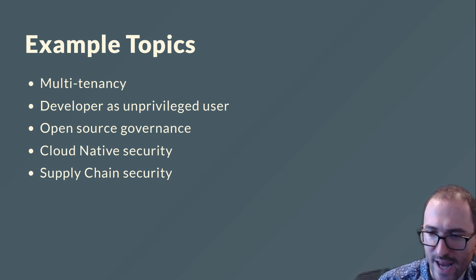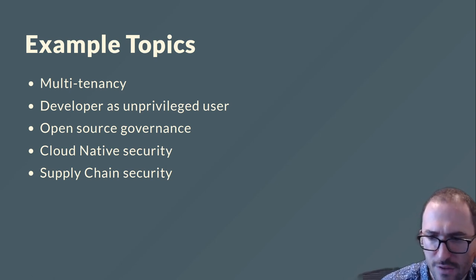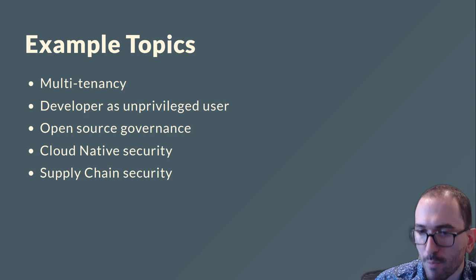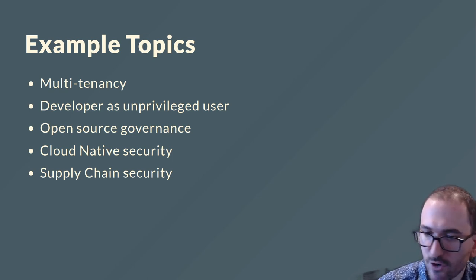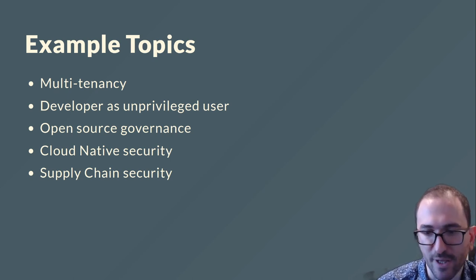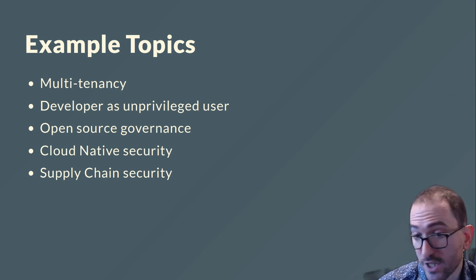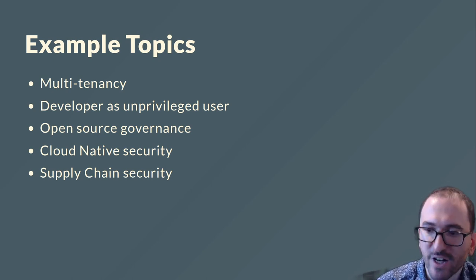We also have discussions on how we can use and contribute to open source given all of our myriad obligations and concerns. This includes some discussion on how each member views using open source, as well as general approaches a member might have in contributing back to the community. We also regularly discuss Cloud Native security in general and topics like supply chain security specifically. Given our need to keep customer data and our intellectual property safe and secure, security is a common topic for us in our meetings. Supply chain security is a good example — one of our challenges is not just in securing our software and systems, but in ensuring we can audit and prove that it's secure as well.